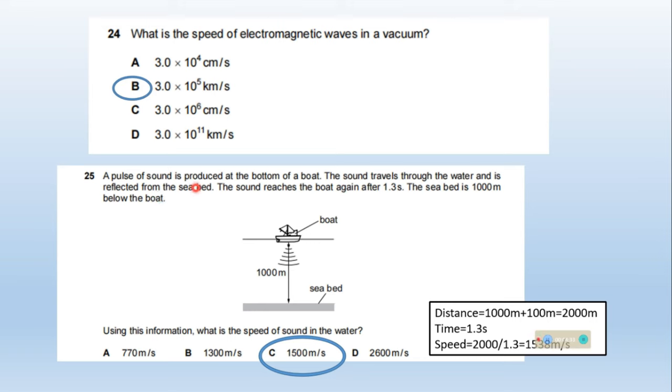A pulse of sound is produced at the bottom of a boat. This is a boat and a pulse of sound is produced. The sound travels through the water and is reflected from the sea bed. The sound reaches the boat again after 1.3 seconds. The sea bed is 1000 meters below the boat.